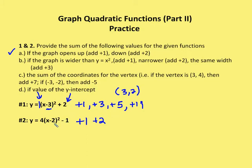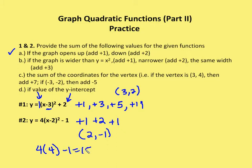The sum of the coordinates of the vertex — it's in vertex form, so pretty straightforward. The vertex is (2, −1), so the sum of those two coordinates is plus one. Then I need to find the value of the y-intercept: plugging in zero for x, I get 4×(0−2)² − 1 = 4×4 − 1 = 16 − 1 = 15. So I add plus 15, and my result is equal to 19.